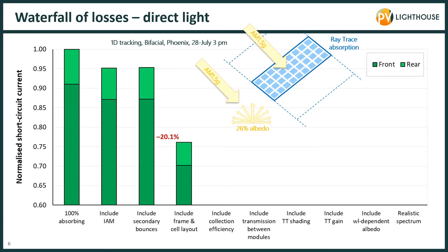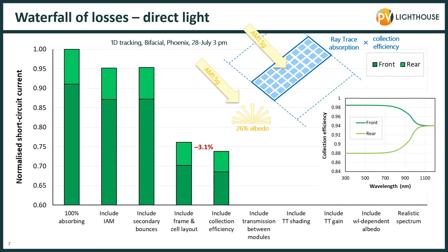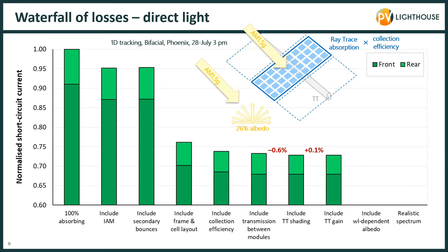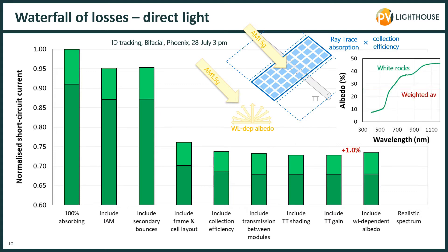Modules aren't really a rectangular lump of highly absorbing material. Instead they contain frames and multiple cells with spaces between them, and light can pass through the cells as well — they're not entirely absorbing. When we take all of that into account we see a 20.1% reduction in short circuit current. Not all photons absorbed by the silicon contribute to the short circuit current; we account for that by multiplying the absorption by the collection efficiency. We can also take into account light that falls between modules within a row, shading from the torque tube, and reflectance of light from the torque tube up onto the cells.